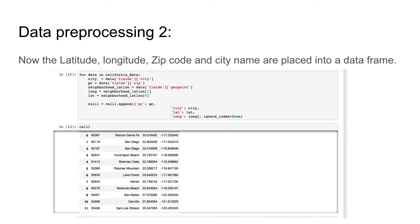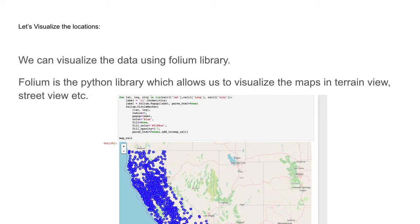After extracting the features, step two is to store them in a dataframe. Once we have the zip code, city name, latitudes, and longitudes, we visualize the coordinates on Folium. Folium is a Python library widely used for designing interactive maps in terrain or street view. The blue points on the map represent the latitude and longitude points of the cities.